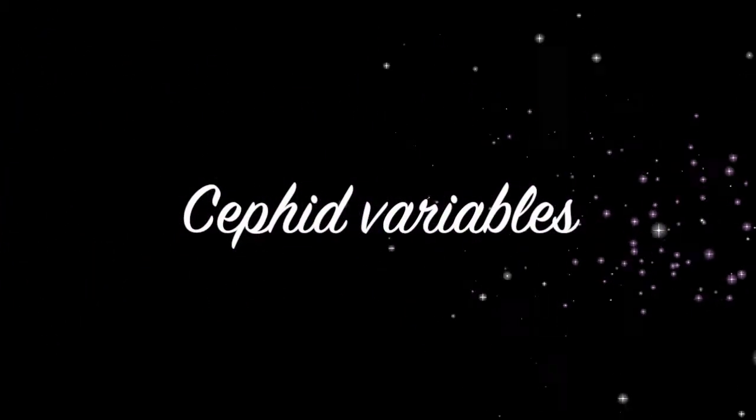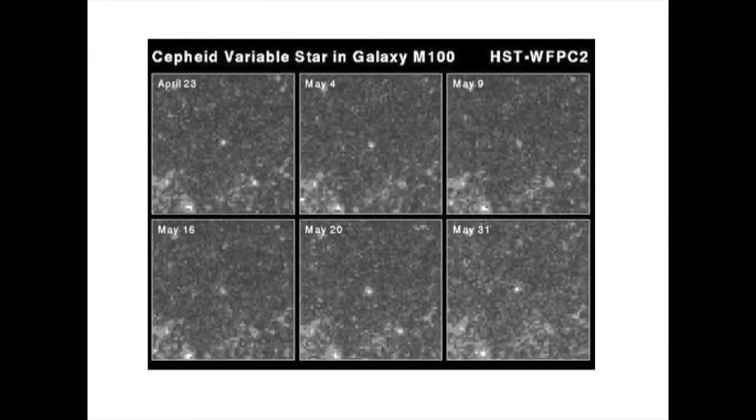Cepheid variables were first noted about 200 years ago. They're a type of star where the brightness changes over a fairly short period, perhaps only of a few days, as can be seen in these six frames from NASA, and in the centre, the variation of the brightness of the star.